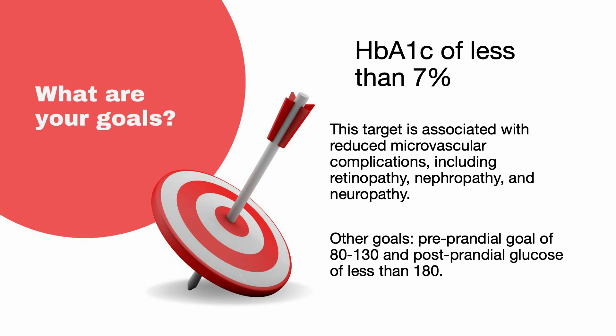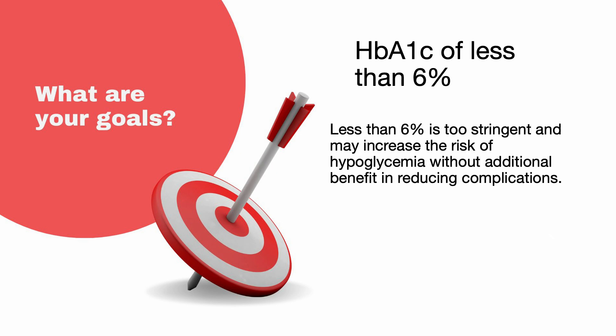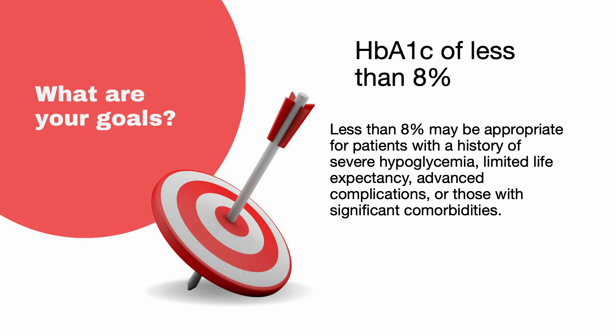However, individualized treatment goals should be established considering factors such as age, comorbidities, hypoglycemic risk, and patient preferences. In healthy patients, the hemoglobin A1c goal is less than 7%, with a pre-prandial goal of 80–130 and a post-prandial glucose of less than 180. Less than 6% is too stringent and may increase the risk of hypoglycemia without additional benefit. Less than 8% may be appropriate for patients with a history of severe hypoglycemia, limited life expectancy, advanced complications, or significant comorbidities.